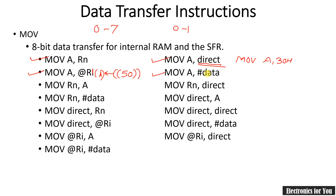In immediate addressing mode, the hash symbol is always used for the source on the right-hand side. MOV Rn, A copies the data of the accumulator into register Rn. MOV Rn, direct copies data from a memory location into register Rn. MOV Rn, #data copies a constant into register Rn. Rn stands for any register from R0 to R7, depending on the active register bank.